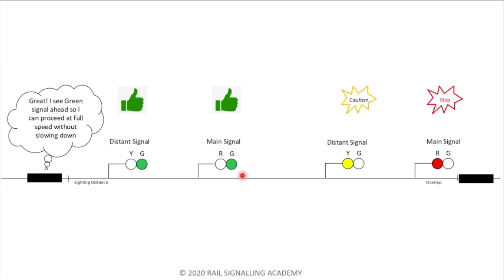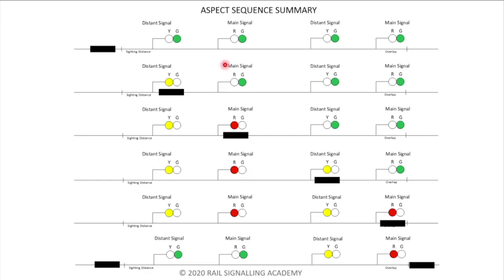Once the train clears the overlap, these two signals can finally upgrade back to green. Remember the definition of headway: the closest distance between two trains without having to slow down. So at the very moment the train clears the overlap, a second train can reach the sighting distance. The driver sees green signals ahead and proceeds at full speed without slowing down.